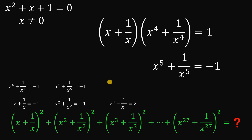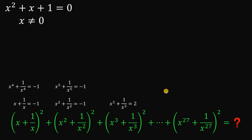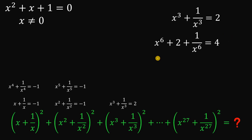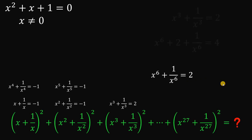For x⁶ + 1/x⁶, we use x³ + 1/x³ = 2 and square it. Subtracting 2 from both sides gives x⁶ + 1/x⁶ = 2.